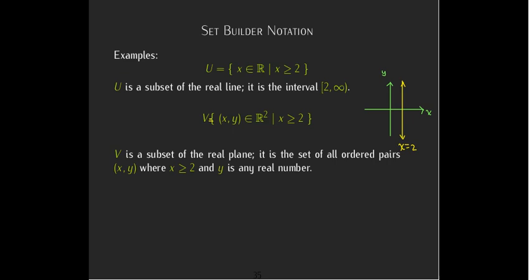So we would indicate that with some shading there. Maybe this whole region, which is including the boundary line and everything, all of the points, all the ordered pairs, to the right of it.